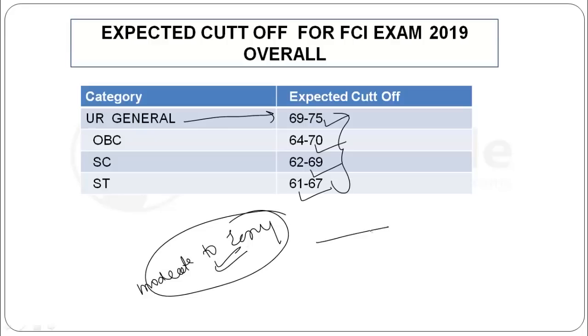English section was easy, which is generally when children are scared. Our RC was story-based, and the sentence arrangement was also story-based. If you read the RC one time, then you can easily solve 5 questions without having to go back to RC, like we generally have to do in PO exam, because those are economy-based or banking-based. The paper was of easy level, our RC was easy.